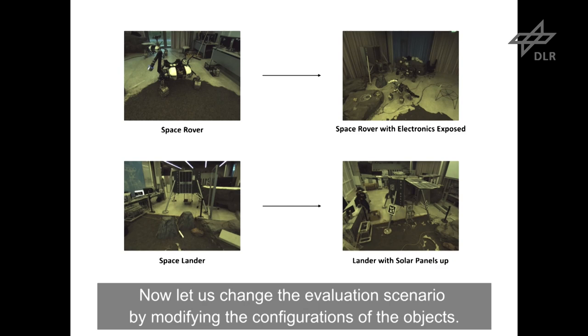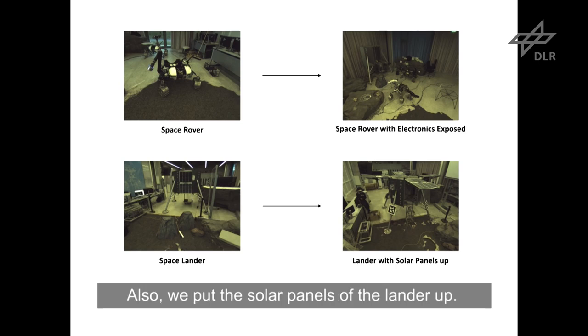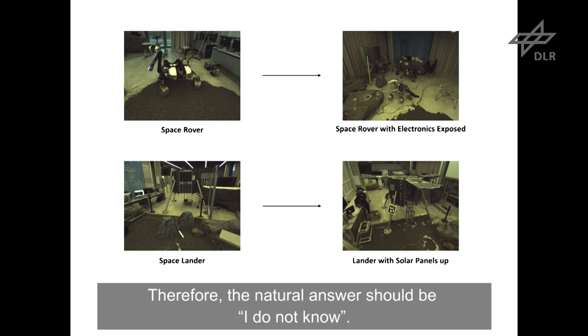Now let us change the evaluation scenario by modifying the configurations of the objects. Instead of the normal space rover, we expose the electronics. Also, we put the solar panels of the lander up. The trained object detector has never seen such configurations of the objects. Therefore, the natural answer should be, I do not know.